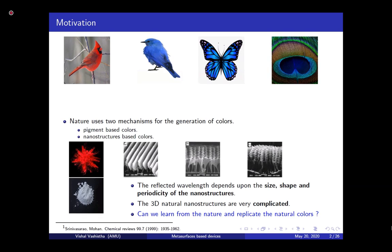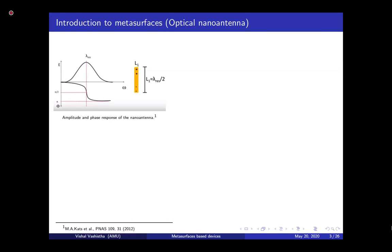The important question is: can we learn something from nature and try to replicate these kinds of natural colors? I'm an electrical engineer — I did my bachelor's and master's in engineering — and I decided to learn from nature and try to replicate this kind of natural color. That is my motivation to work in this direction. To answer whether we can replicate it, I want to introduce something called an optical nano antenna.